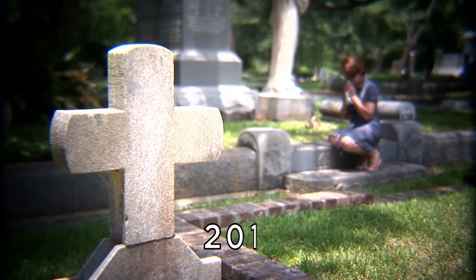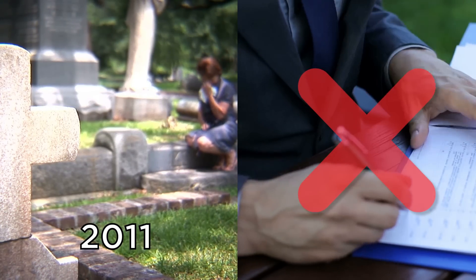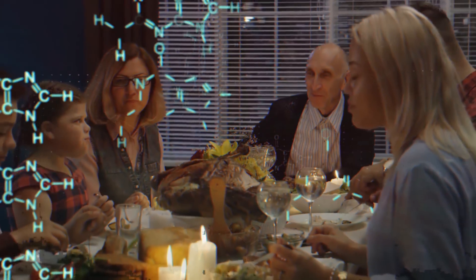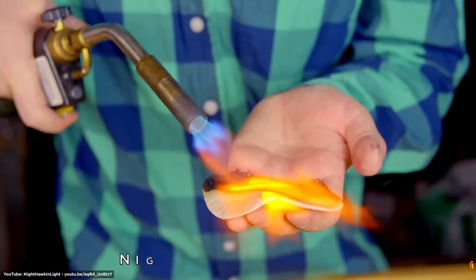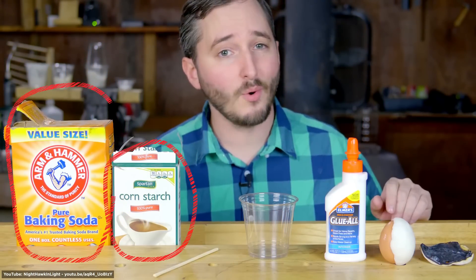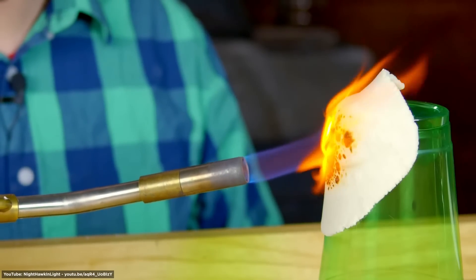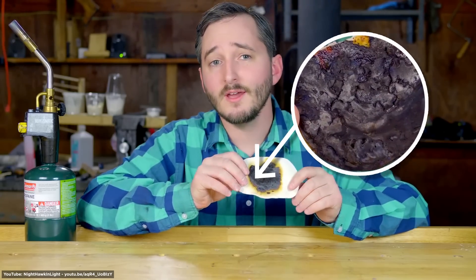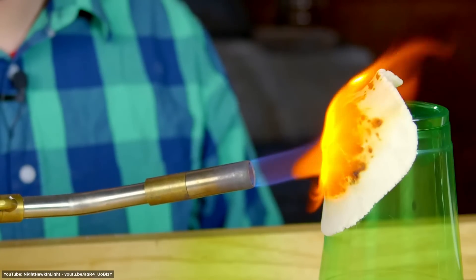Sadly, Ward died in 2011 without ever commercializing or patenting his revolutionary material. In fact, only his closest relatives know about the composition of Starlight. Even so, its properties have been successfully replicated. YouTuber Nighthawkenlight created a similar material in 2018. He used cornstarch, baking soda, and PVA glue. After drying, the hardened material creates a small layer of carbon foam on the surface when exposed to high heat, insulating the material from further heat transfer.